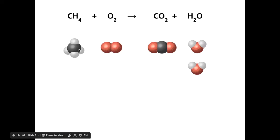So the H's are sorted now. The C's are sorted. What about the O's? So we've got one, two, three, four on the right, but we've only got two on the left. So a quick fix for that would be another O2 molecule. And now if you count up, everything's balanced. So how would we write that as a chemical equation? We put a two in front of the O2 and we'll put a two in front of the H2O.